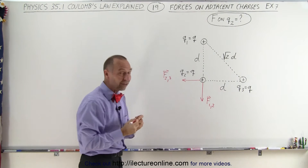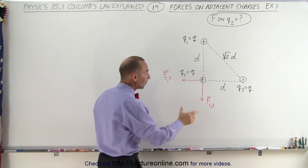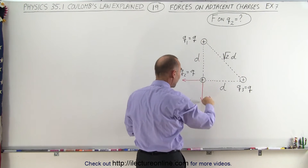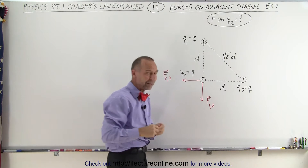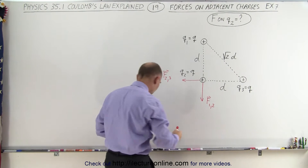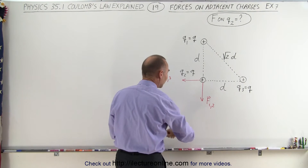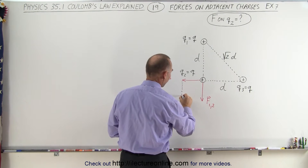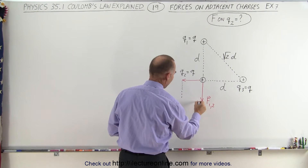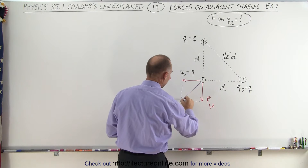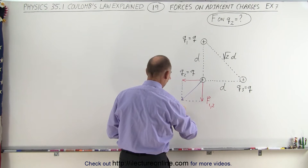Now we realize that since the distance between these two is the same as the distance between those two, the magnitude of these forces should be the same. To find the total force, we simply have to add vectorially these two forces together. So this will be the final force, or the total force, F total.